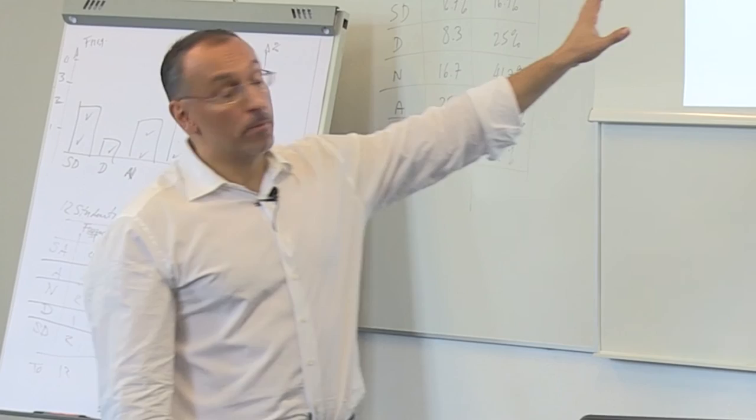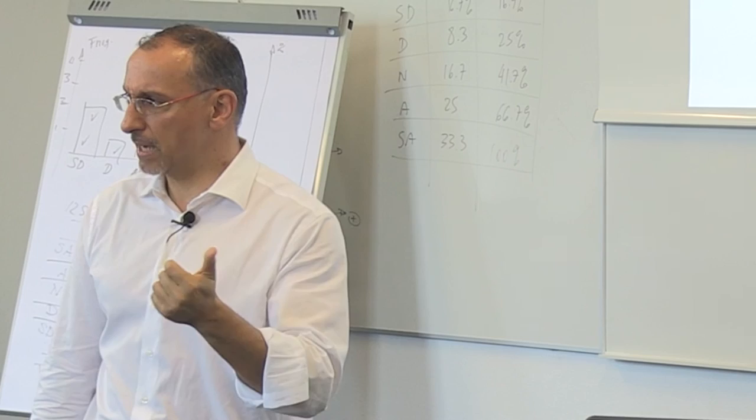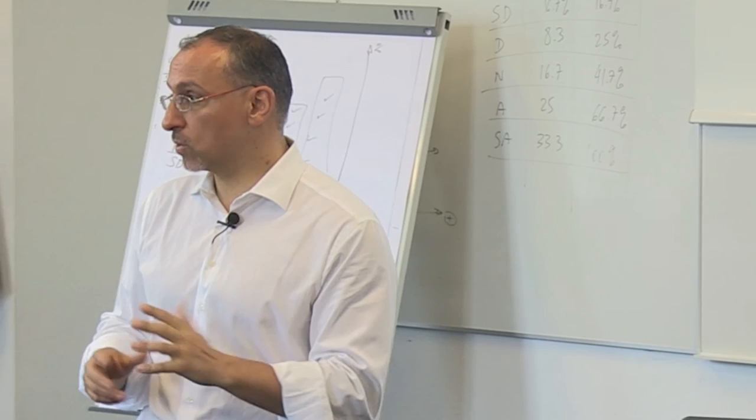For most stem and leaf plots, they would give you a five number summary. They will give you the maximum, the minimum, the middle number, and then the first quartile and third quartile. We'll talk about it after lunch.